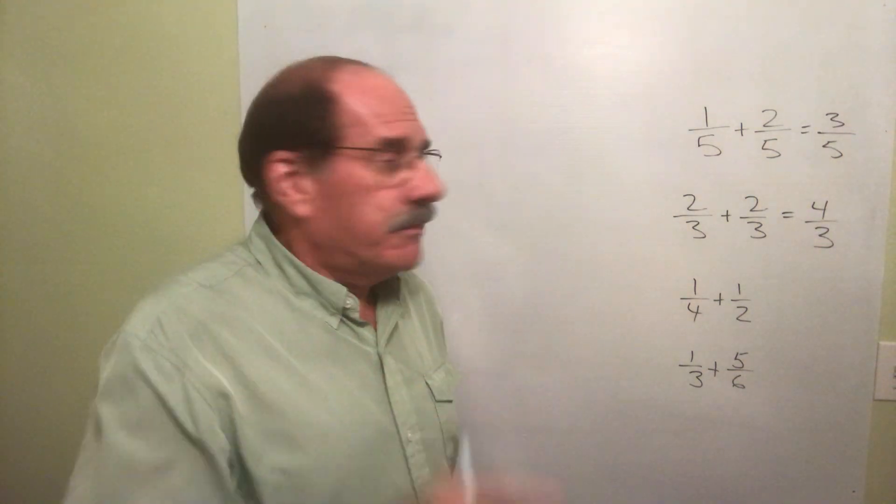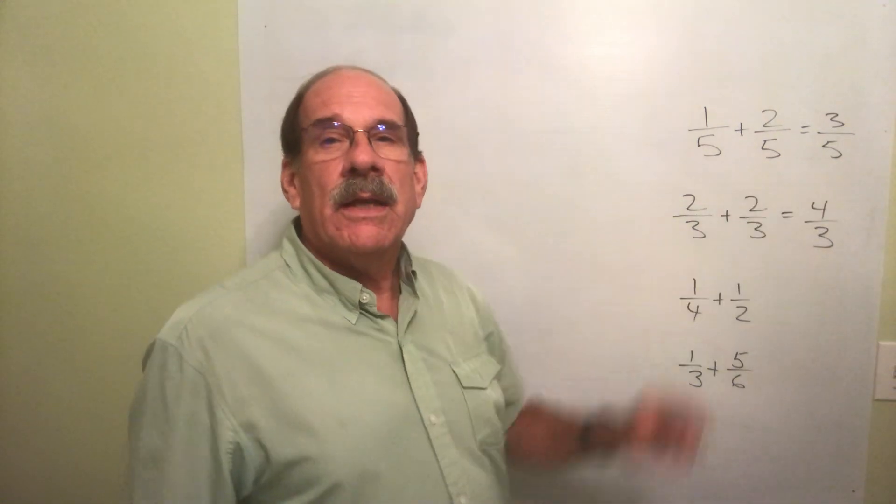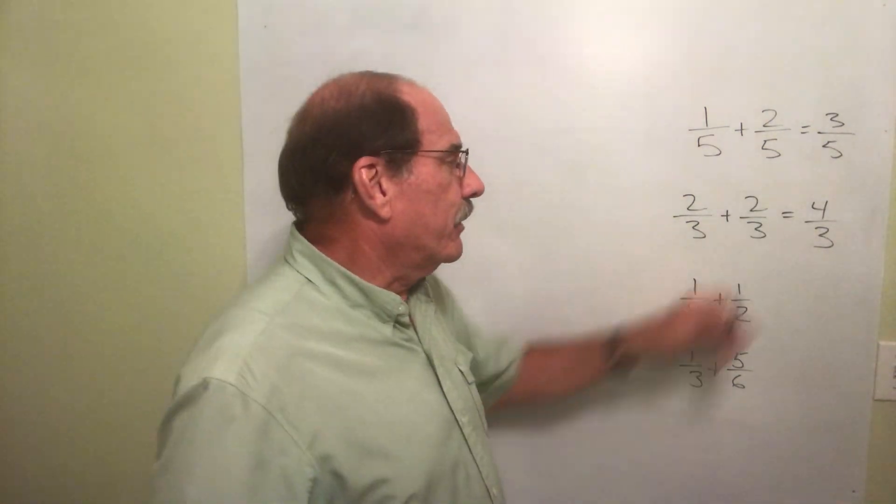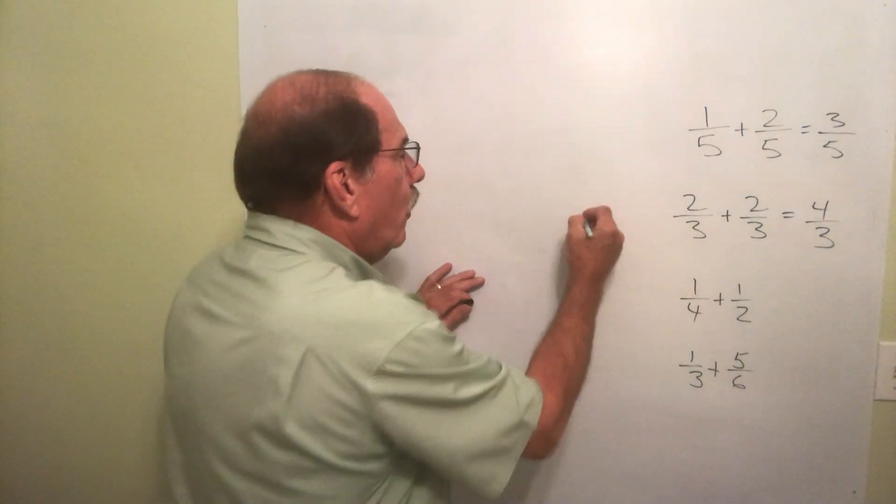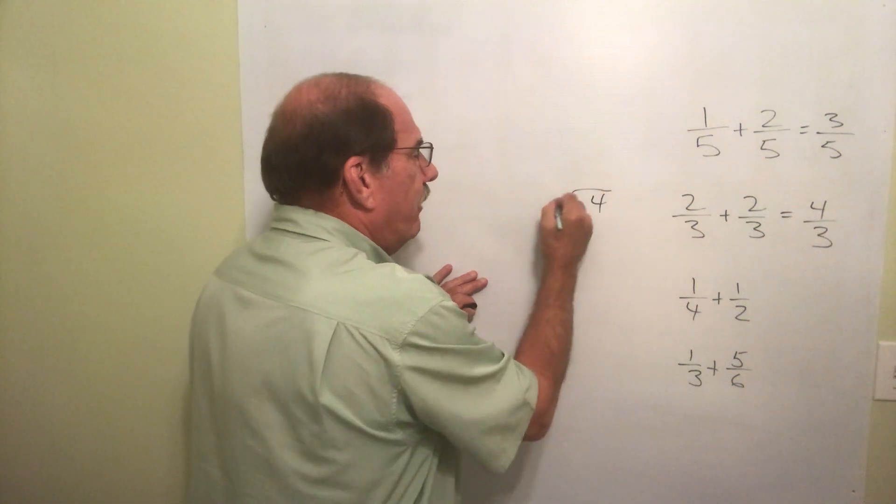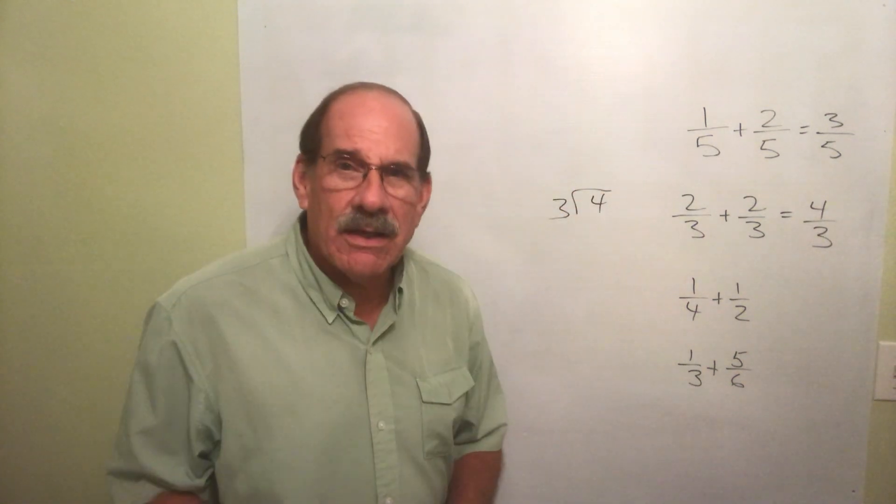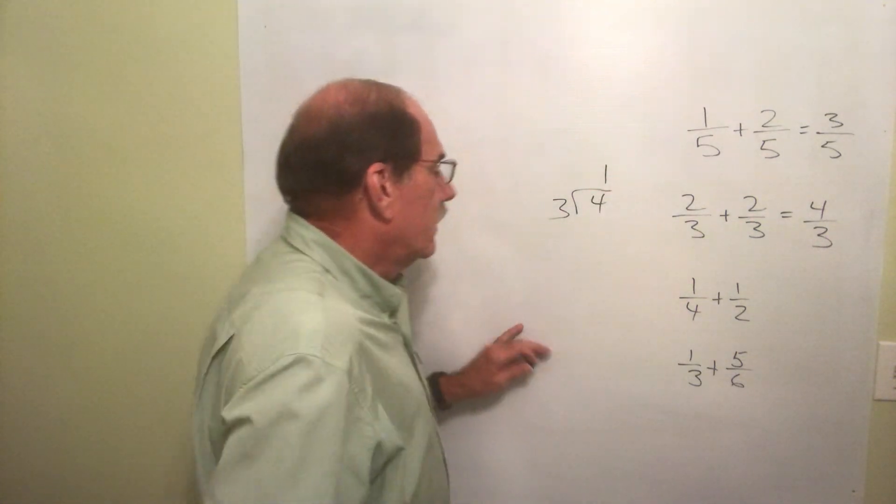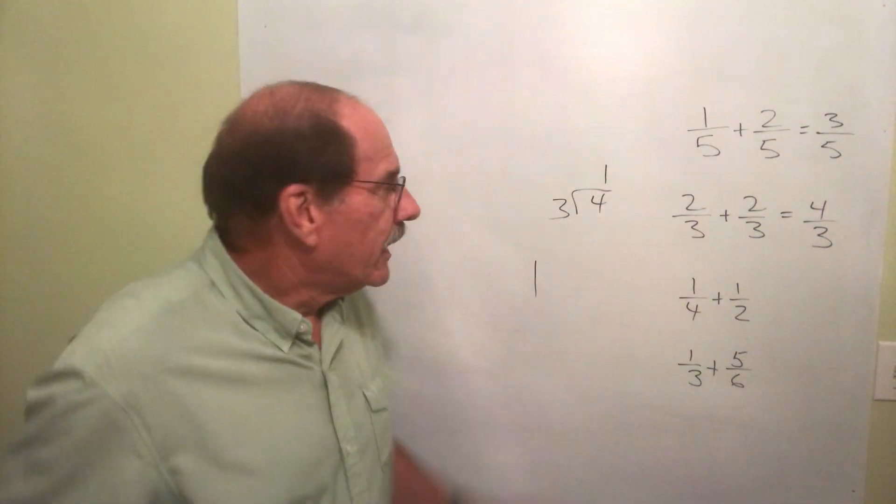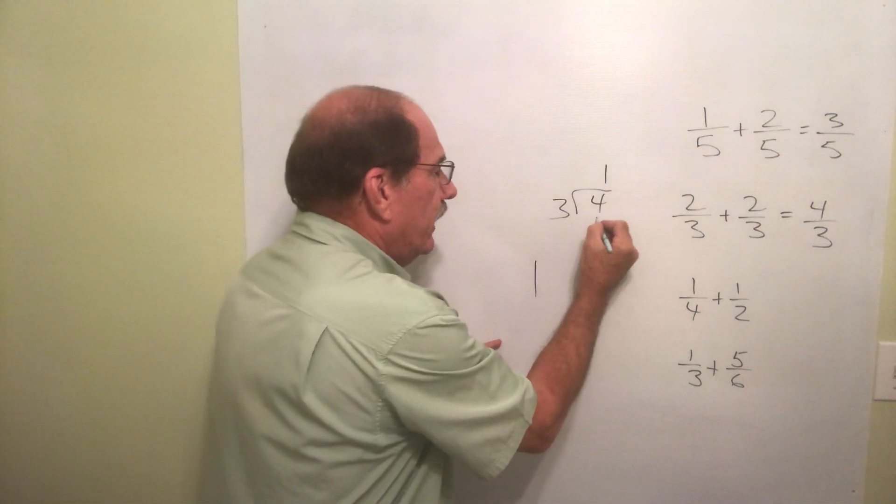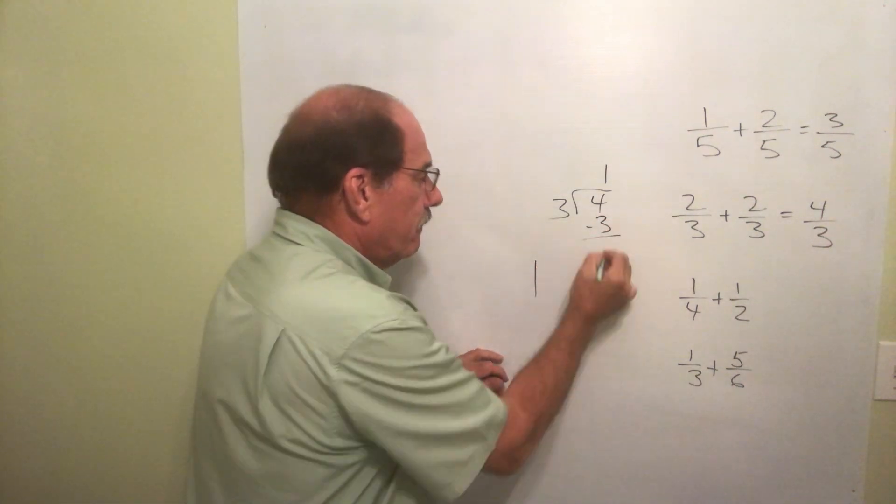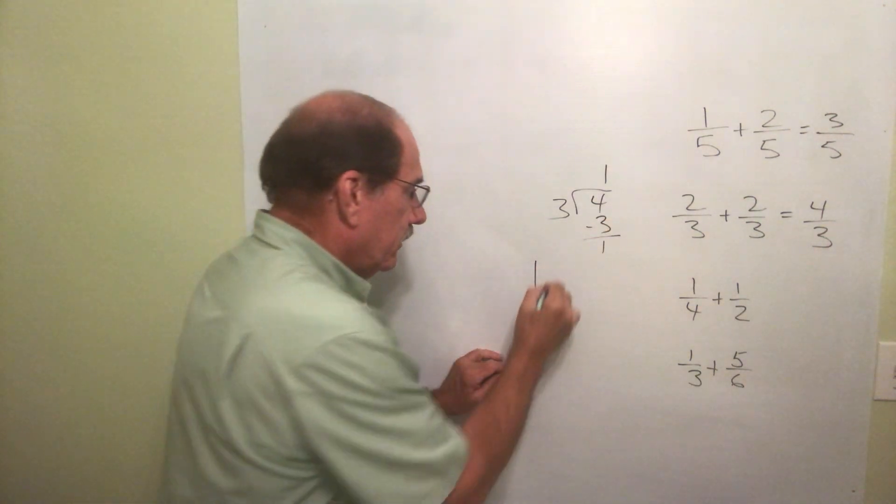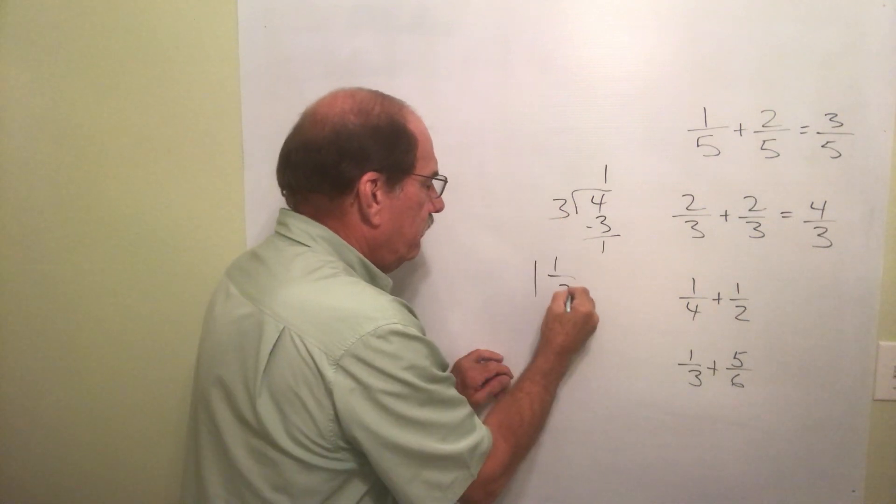Well, we discussed that in the video right above us. Let's convert this to a mixed number. You take the number and just divide four divided by three. Well, let's see. Three goes into four one time, so put the one there. That's the whole number.